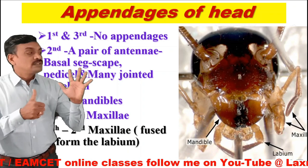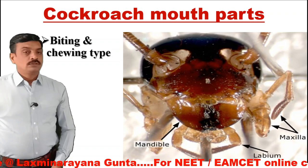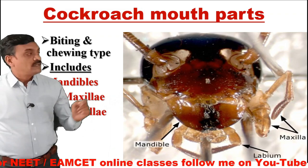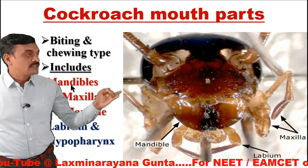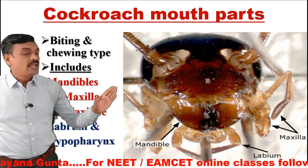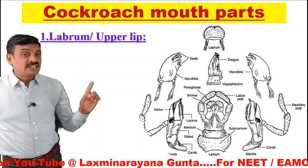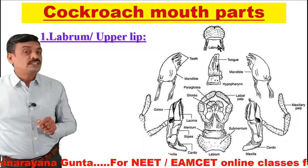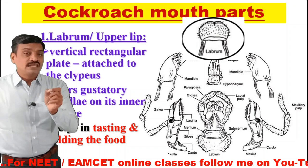Coming to the mouth parts of the cockroach — they are called biting and chewing type mouth parts. The mouth parts include a pair of mandibles, first maxillae, second maxillae, labrum, and hypopharynx, which is also called the lingua. Out of these, mandibles and the two pairs of maxillae are paired structures, while labrum and hypopharynx are unpaired. The labrum, or upper lip, is attached with the head sclerite called the clypeus, and it bears gustatory sensilla on its inner surface, which are meant for tasting and holding the food.